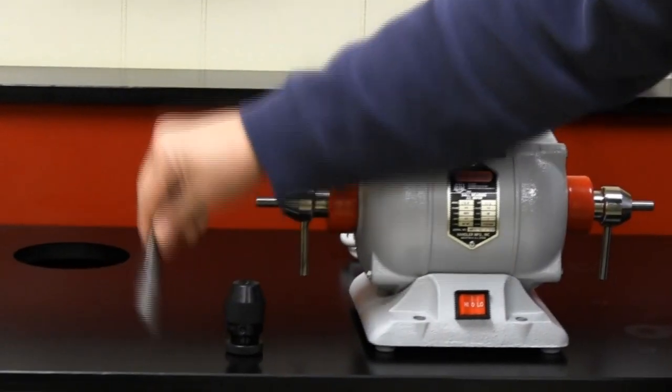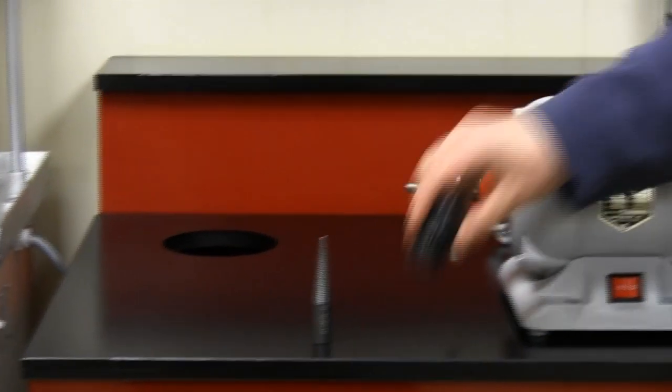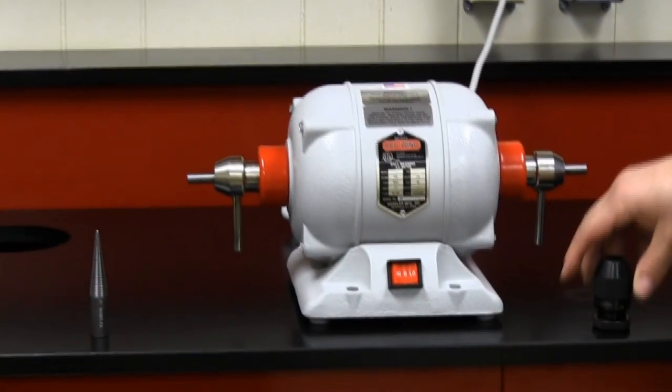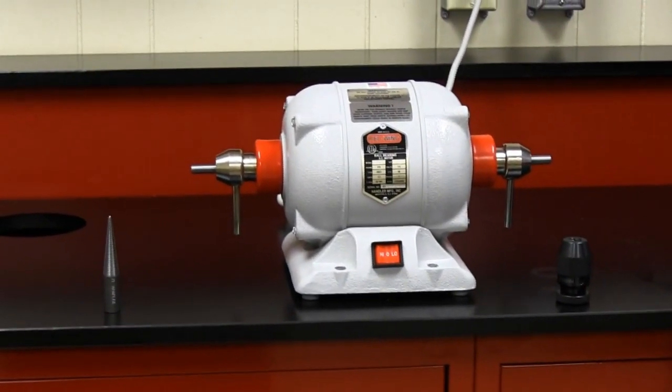Typically, we recommend a number 7L spindle for the left side for polishing and a number 18 Precision Atlas chuck on the right side for grinding and cutting and sanding.